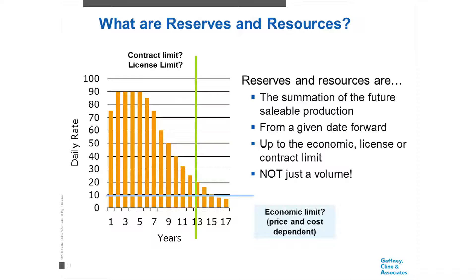Reserves are the summation of future saleable production from a given date forward, up to what we call the commercial limit — the economic, license, or contract limit, not just the volume. We bring our oil field online, get a ramp-up, some steady production, then decline through to some limit, which we call the technical limit. That's a typical oil field production profile.